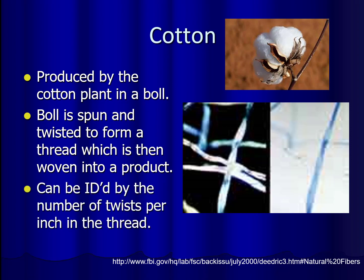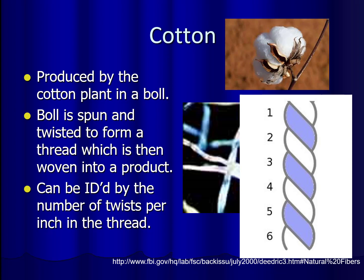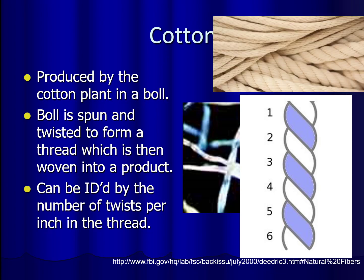Cotton threads can be identified by using the number of twists per inch. For example, a six-twist-per-inch thread might have two separate fibers spun around each other to form that thread. We can also add many fibers together and make a rope by twisting in on itself again — a very common way cotton is used in an industrial setting.